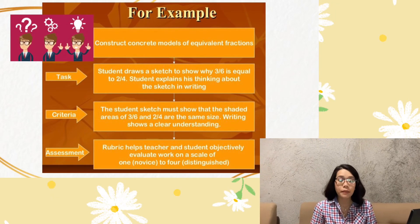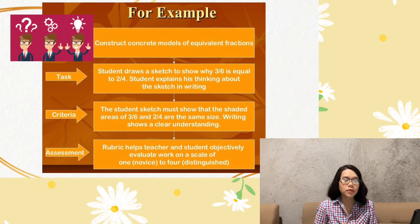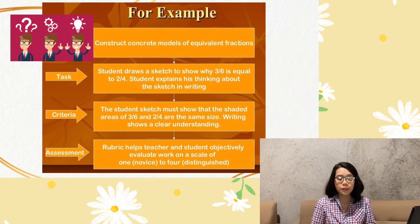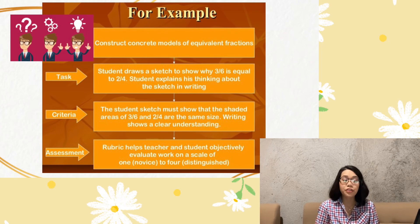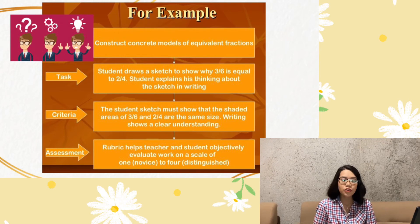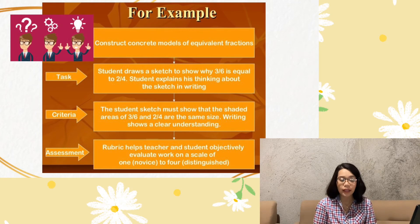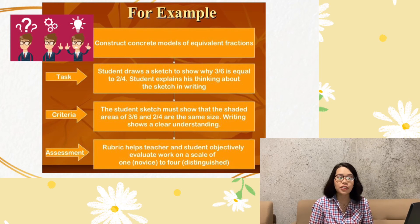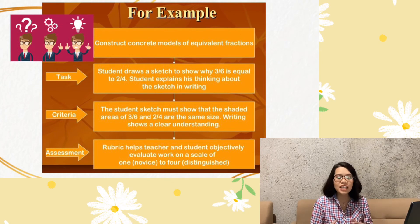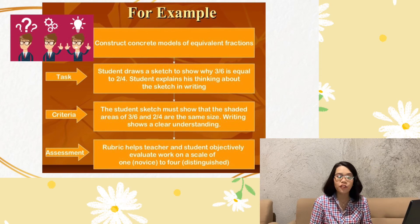Here is an example for a math class. The objective is: at the end of the lesson, students will be able to construct concrete models of equivalent fractions. The task is: the student draws a sketch to show why three-sixths is equal to two-fourths, and explains their thinking about the sketch in writing. The criteria is that the student's sketch must show that the shaded areas of three-sixths and two-fourths are the same size, and that the writing shows a clear understanding. The rubric helps teacher and students objectively evaluate work on a scale of one (novice) to four (distinguished).